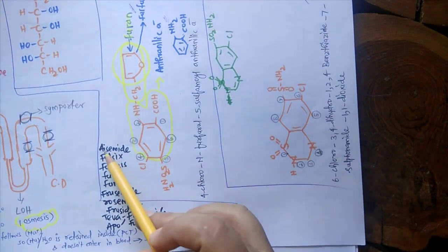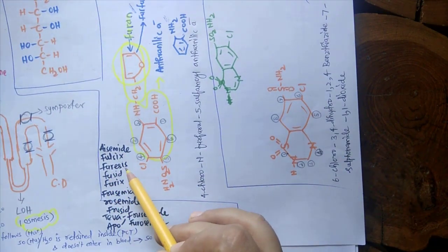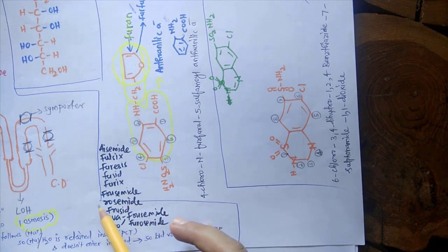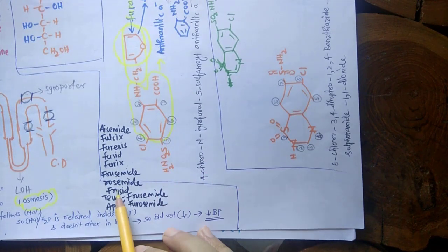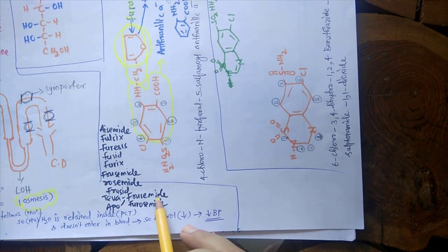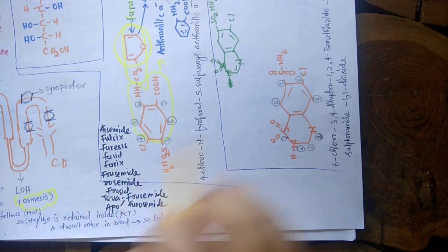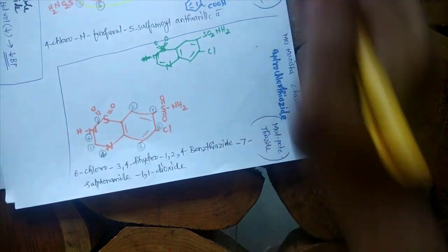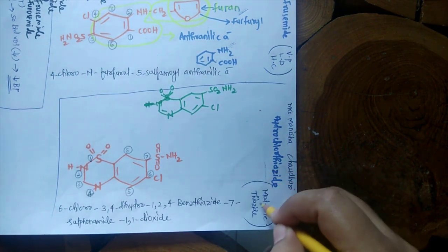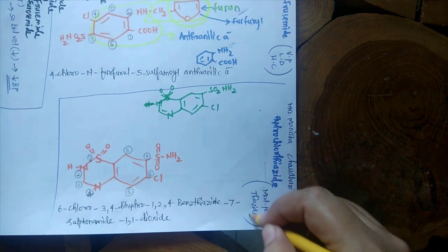There are many more brand names, but those are some that have been listed. Coming towards the next class, that is moderately potent diuretics, also known as thiazide diuretics. Example is hydrochlorothiazide — since the suffix is 'thiazide', they are known as thiazide diuretics.